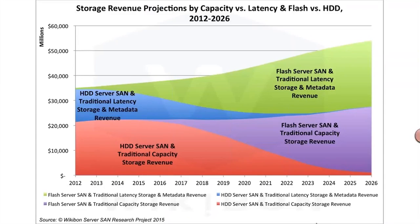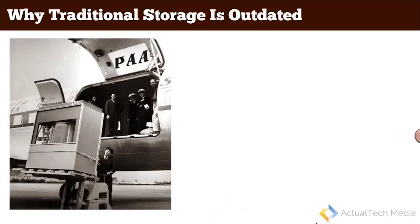This graph from Wikibon predicts storage revenue by capacity — flash and hard drive storage solutions from 2012 to 2026. Their predictions are that traditional storage, SAN capacity, the dollar amount spent over time is just going to go down and down. New technologies such as flash storage and software-defined storage solutions are going to increase in revenue over time. So it's not just Andreessen Horowitz predicting this; it's research firms, and I think everyone out there knows it as well.